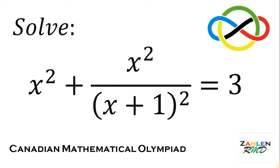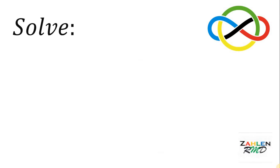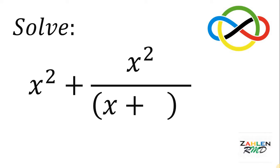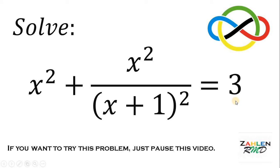Good day everyone. Let's try to answer an item on the Canadian Mathematical Olympiad. Here's the question: solve for the value of x. We have x squared plus x squared all over x plus 1 squared equals 3. Now if you want to try this problem, just pause this video and if you're ready, here's the solution.